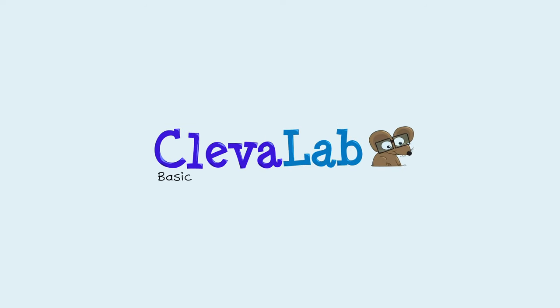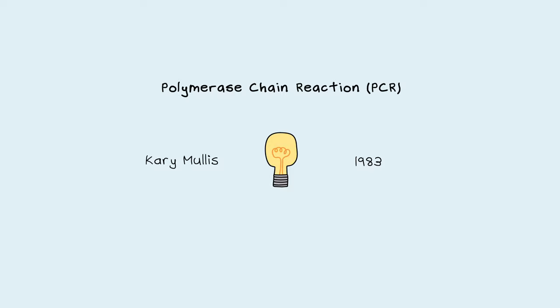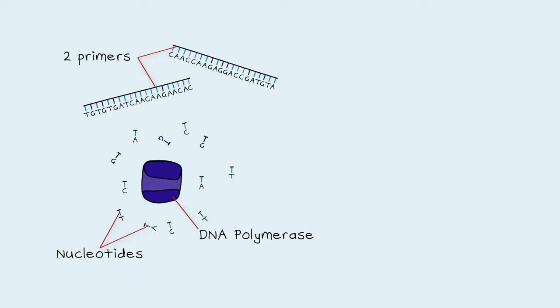CleverLab: Basic Principles of Human Biology Explained. An American scientist, Cary Mullis, invented PCR in 1983. His idea was to use two primers, nucleotides, and DNA polymerase to make unlimited copies of DNA.